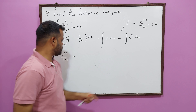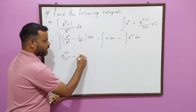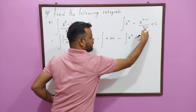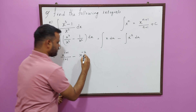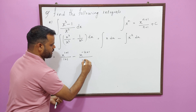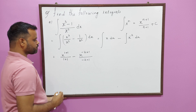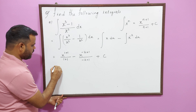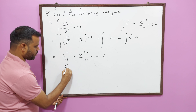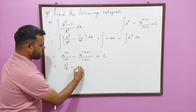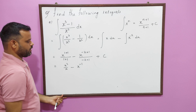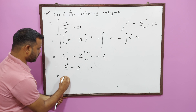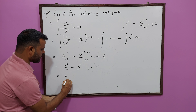Now this is in the standard form. For the first term, the power of x is 1, so the value of n is 1. Applying the formula, it becomes x to the power 1 plus 1, divided by 1 plus 1.